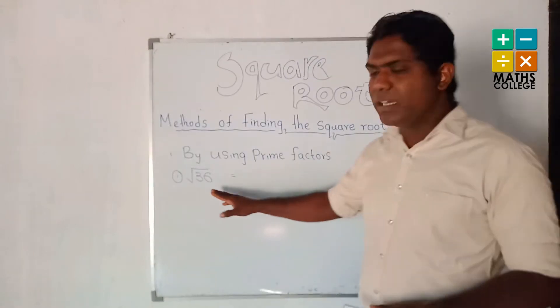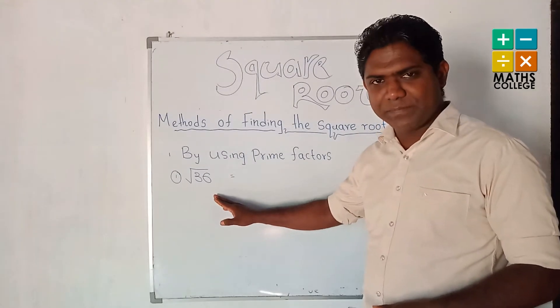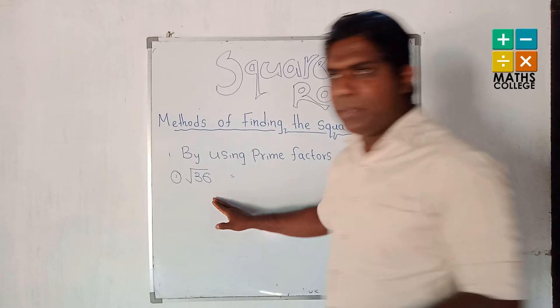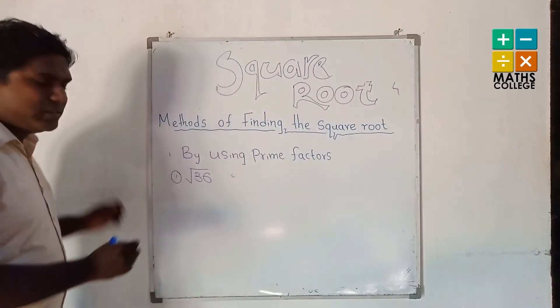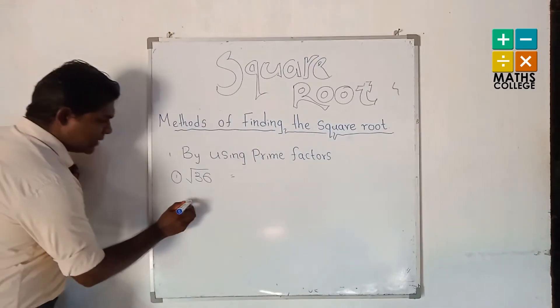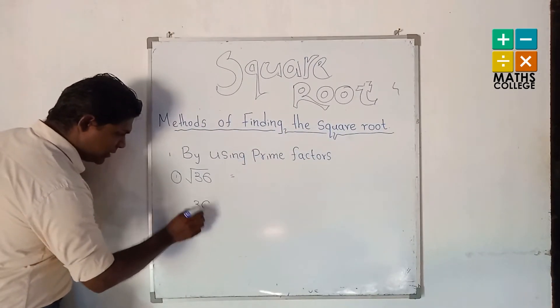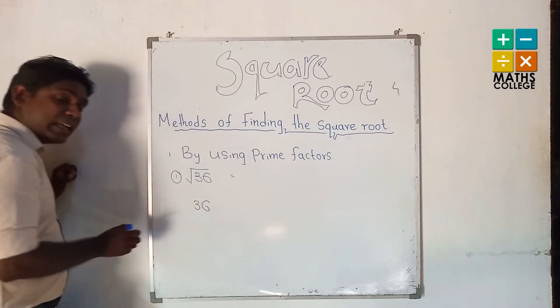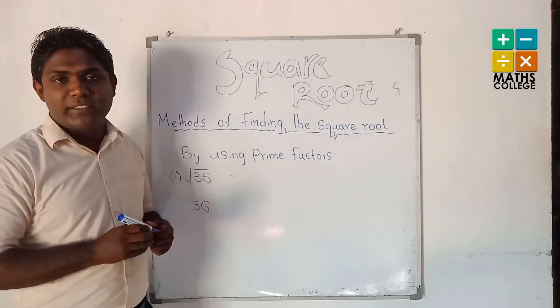We can consider as example the number 36. My dear students, you can try 36. You can find 36 as a product of prime factors.